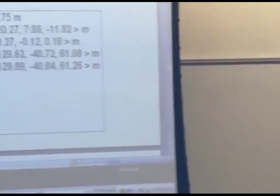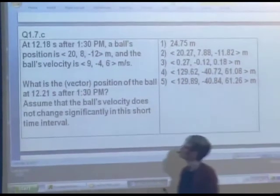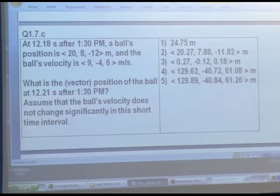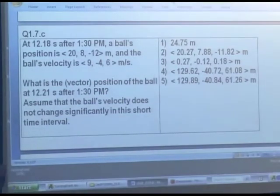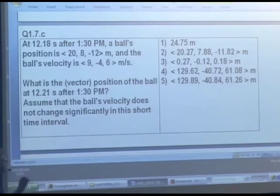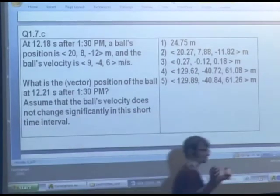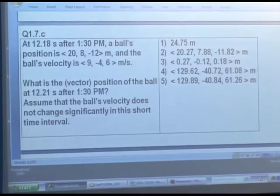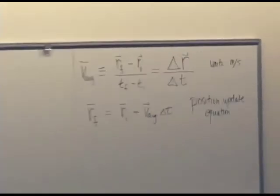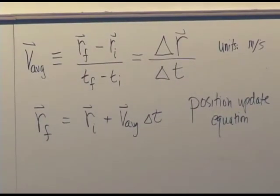So, let's just try to apply it. It's not a particularly complicated equation. It's one that should be fairly easy to apply. So, here's a ball. It's got initial position is 28, negative 12 meters relative to some origin. At that moment, its velocity is 9, negative 4, 6 meters per second. If we make the assumption that that velocity at that moment is a good approximation to its average velocity during the next time interval, where will the ball be at 12.21 seconds after 1.30? Okay, so that's the question. So, let's calculate it using this equation. So, that's all there is to do. Okay, 30 seconds.